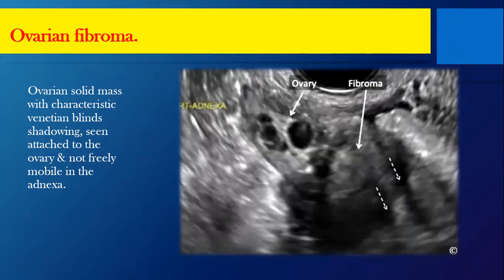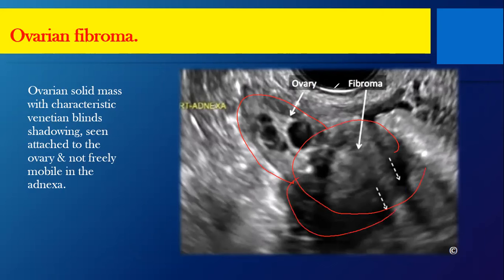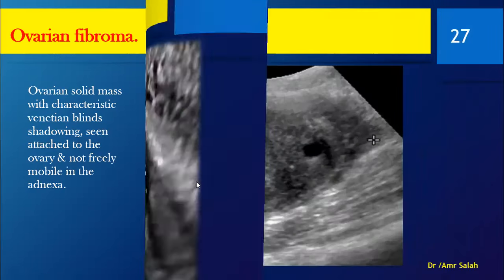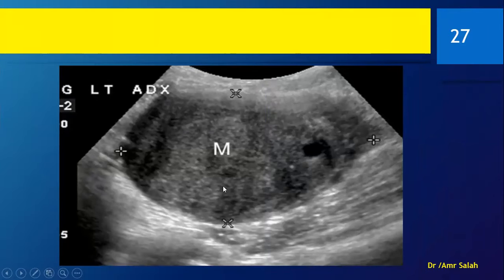Here I have a lesion that is mostly hypoechoic, inside the ovary. I might suggest this is a fibroma. If I see a lesion looking like a fibroid inside the ovary — one, I have to be sure it is inside the ovary, and two, it looks like a fibroid — I would suggest this is a fibroma.